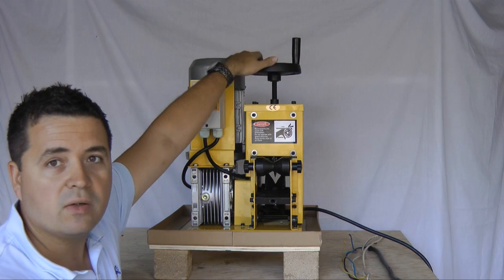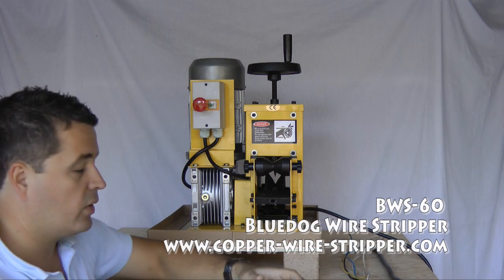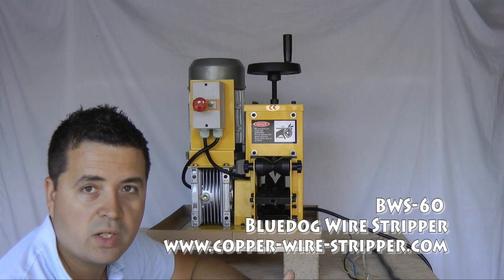This handle up here lowers and raises the blade so that you can adjust accordingly to the thickness of the wire that you're running through the machine.